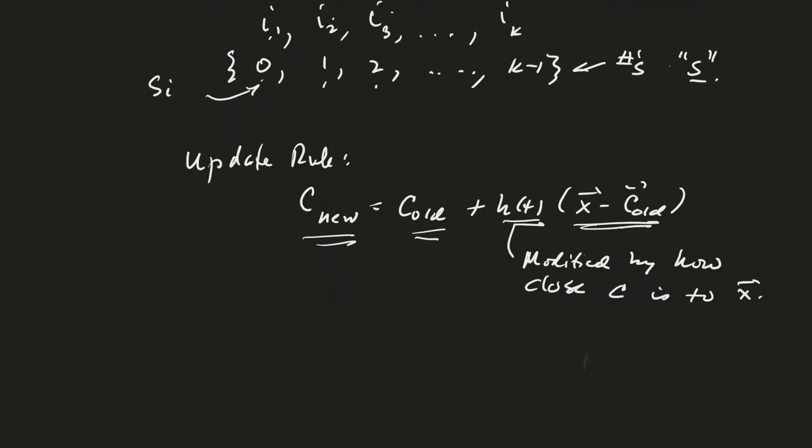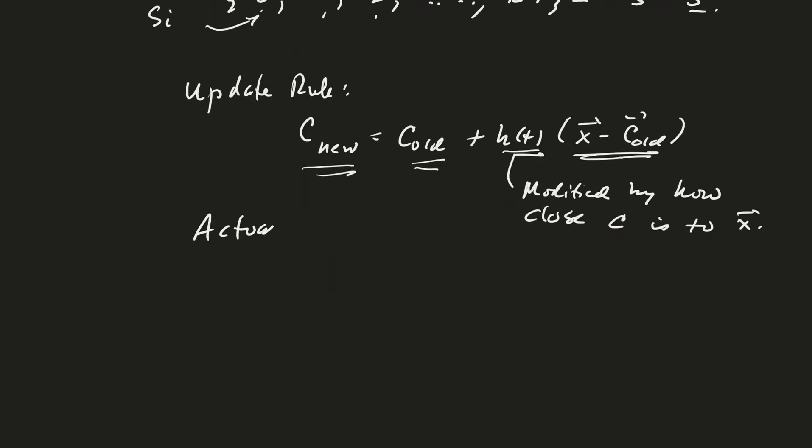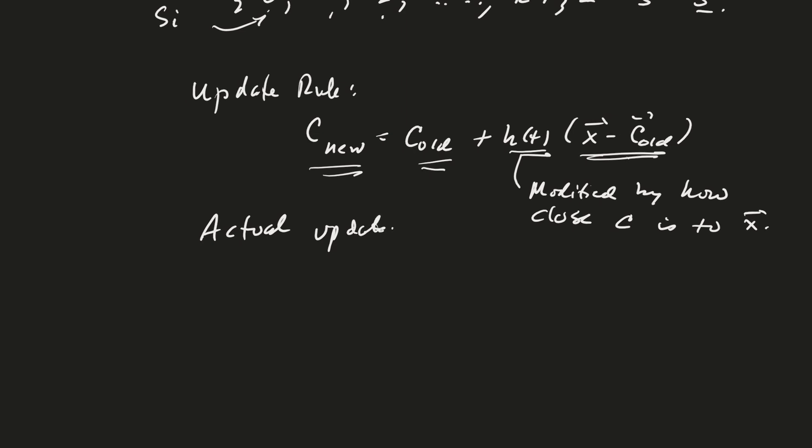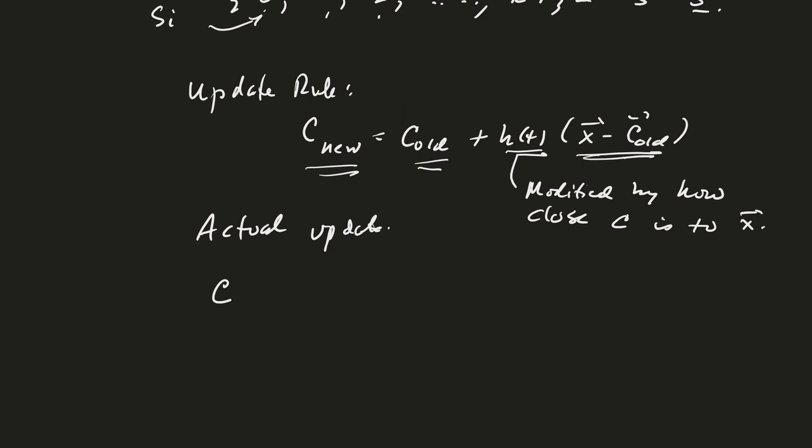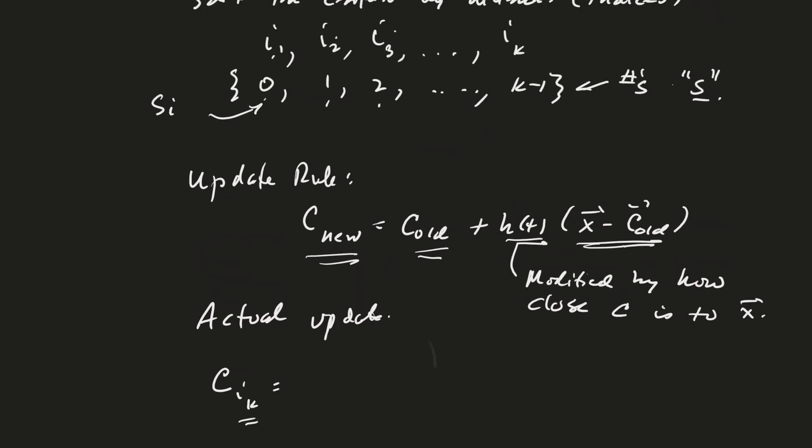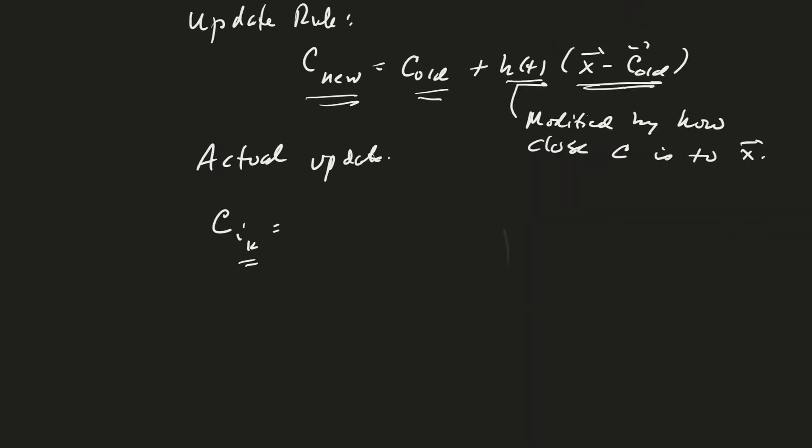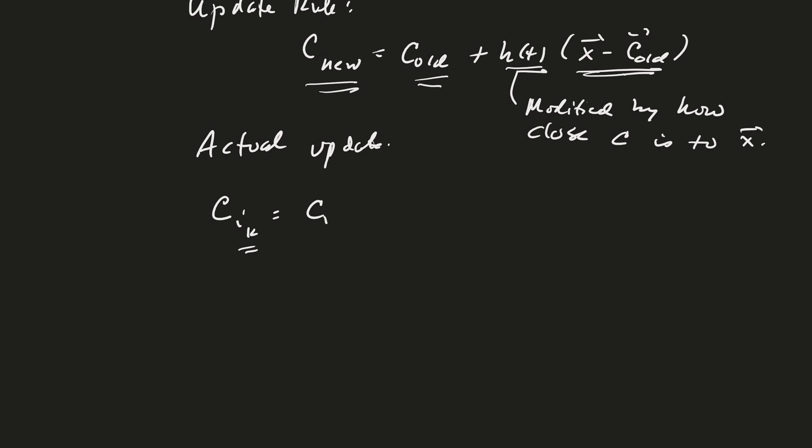And so the actual algorithm will look like the following. The actual update rule is going to be C, let's see. I'm trying to follow my notes, but I shouldn't have written it that way. C, I, K. Remember, the I, K is the sorted centers here, so they're not in order is kind of the issue with that. C, I, K, plus Epsilon times an exponential function with minus S, I, K, divided by Lambda. And this is going to be your H of T here, times X minus C, I, K.